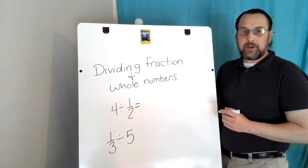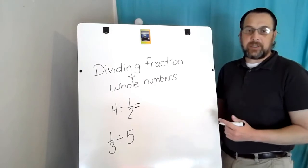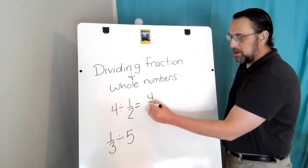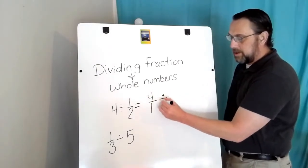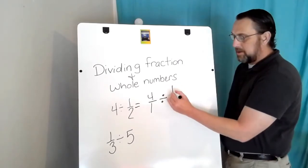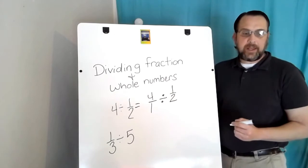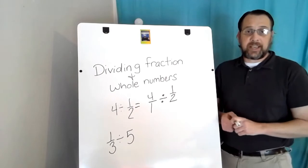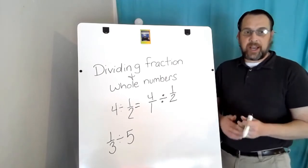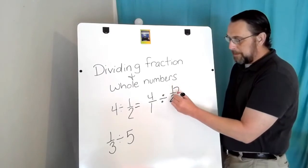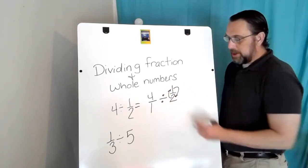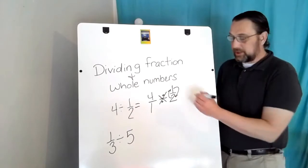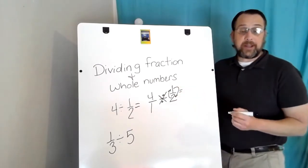Let's get started. Just like with multiplying fractions and whole numbers, I'm going to change the whole number into a fraction by putting a one underneath — four over one — divided by one half. Now I am going to flip, or get the reciprocal of, the second fraction — always the second fraction. I will flip it, which is also called a reciprocal, and I will change the operation from division to multiplication.